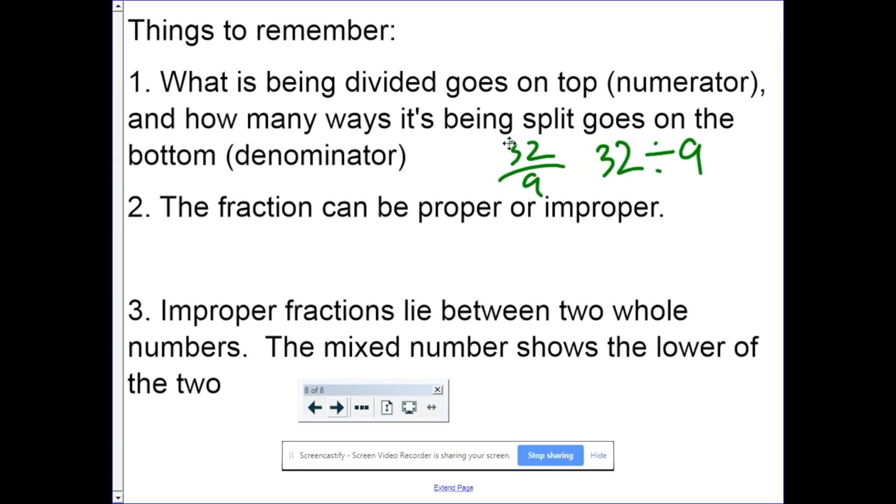Two. The fraction can be proper or improper. It could be three divided by seven, or eight divided by five. And lastly, improper fractions lie between two whole numbers. The mixed number shows the lower of the two.